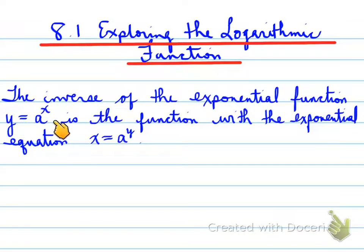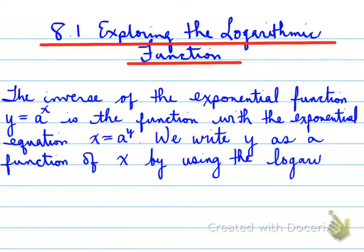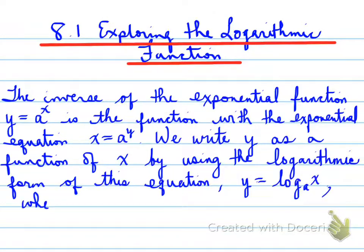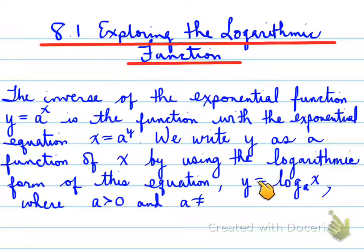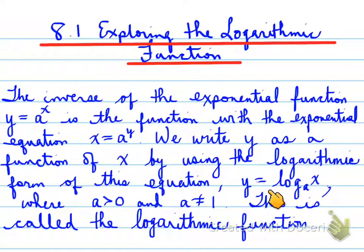We're looking at this function and taking the inverse. To take the inverse, you swap x and y, and this is what you get. When you want an inverse equation, we need to isolate for y — this is y inverse. We write y as a function of x using the logarithmic form: y equals log base a of x. This is the inverse equation of y equals a to the x, where a is greater than 0 and a does not equal 1. This is called the logarithmic function.